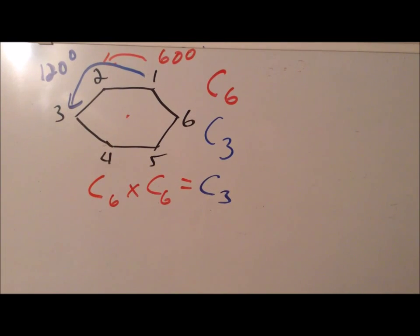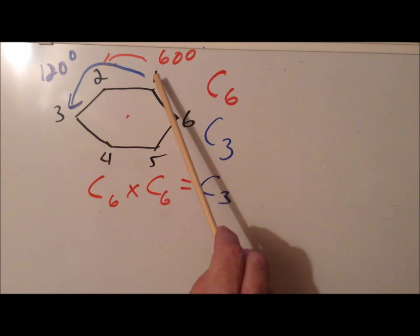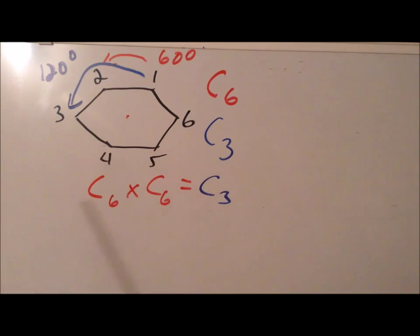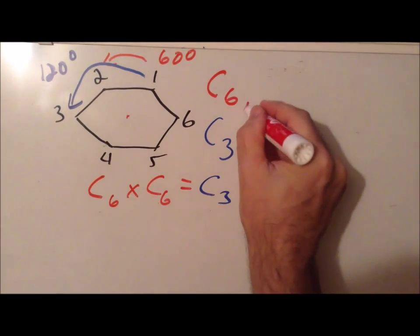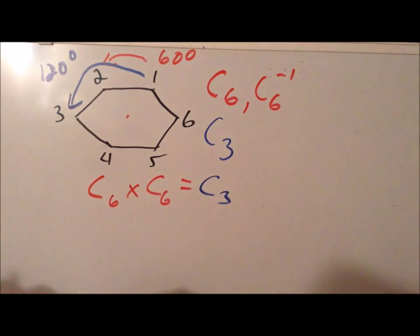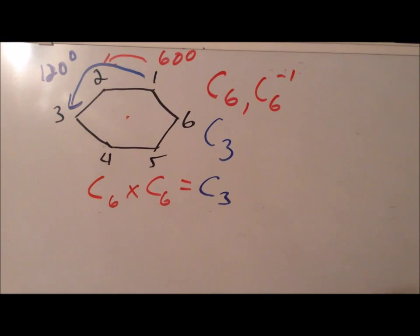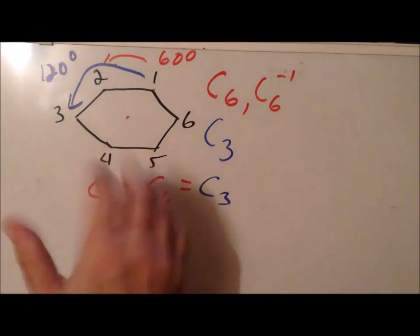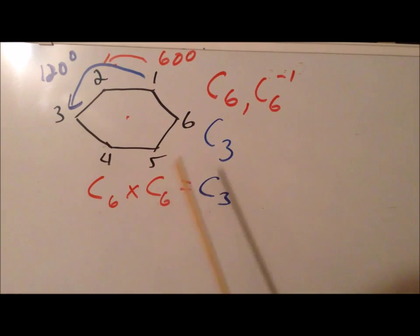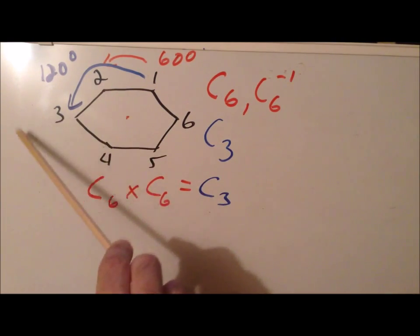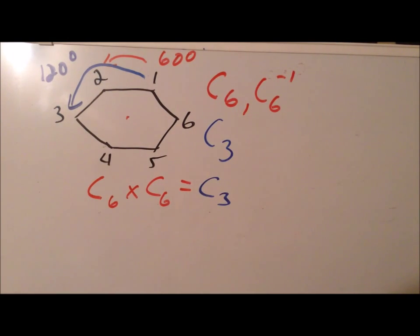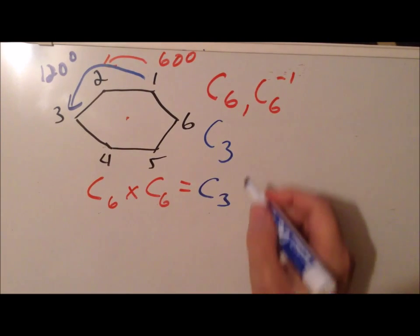If we rotate clockwise by 60 degrees, taking vertex 1 to vertex 6, that gives us C6 to the minus one. So not only do we have C6, we also have C6⁻¹ as a symmetry operation. Similarly, rotating by 120 degrees clockwise — taking vertex 1 to vertex 5, 6 to 4, 5 to 3, 4 to 2, and 3 to 1 — gives us C3⁻¹. So both C3 and C3⁻¹ are symmetry operations of the hexagon.